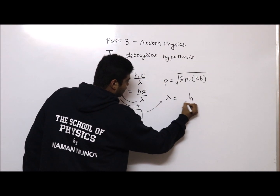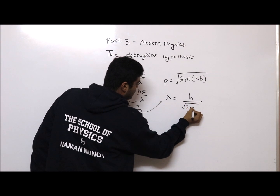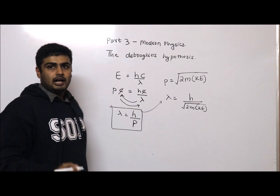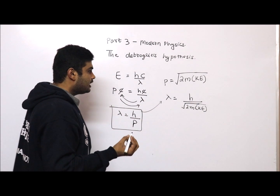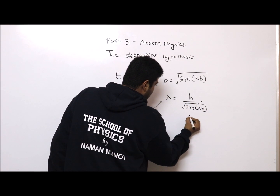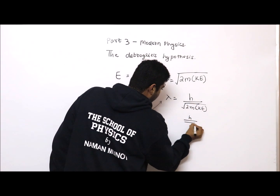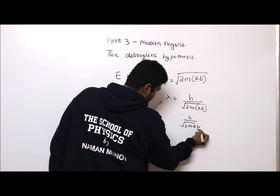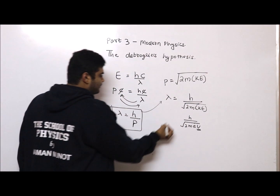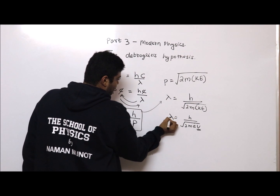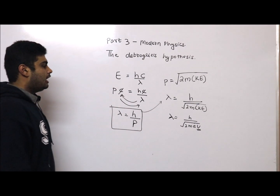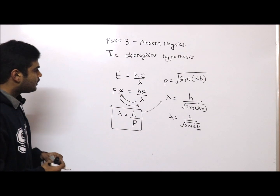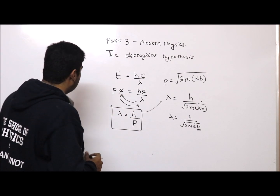So the de Broglie formula can be written as λ = h / √(2m · KE). As we learned in our last chapter on the photoelectric effect, kinetic energy can also be written as eV, where V is the stopping potential. So λ = h / √(2m · eV) is the de Broglie formula.